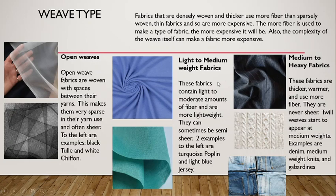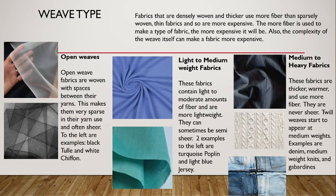Examples of medium-to-heavy fabrics include gabardine — a suiting fabric typically made out of wool, though wool-silk or silk varieties exist — a sweater knit, which is a little heavier than a t-shirt knit, and denim, which goes a little bit more toward the heavy side of things.